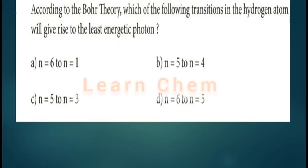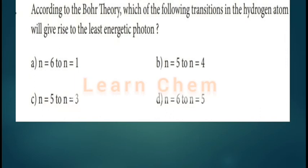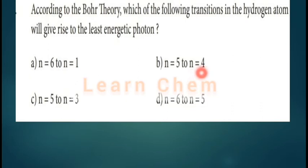The transition 6→1 is a large transition covering 5 shells, so it will be high energy. The transitions 5→4 and 6→5 each involve only 1 shell difference, so they will have least energy. We narrow down to these two options.